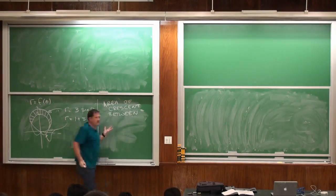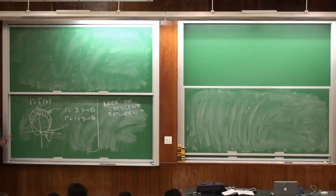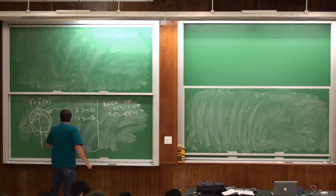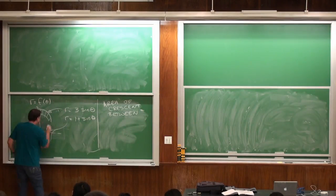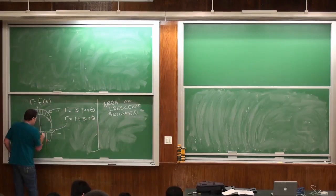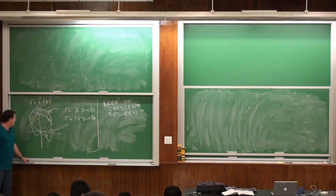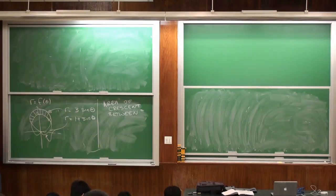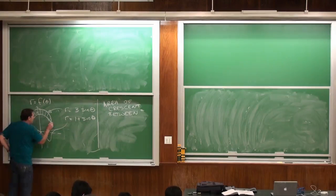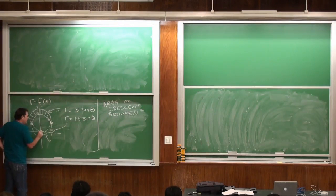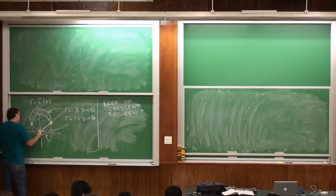This works just like finding rectangular area, except we're thinking in polar. We need to know where the two curves intersect — we need to find those two intersection points and integrate our angles from one to the other over that range of theta.